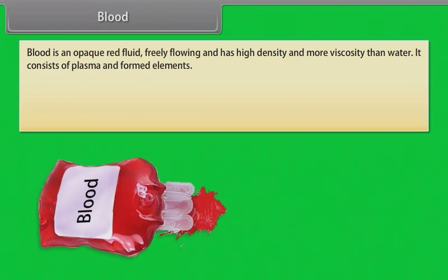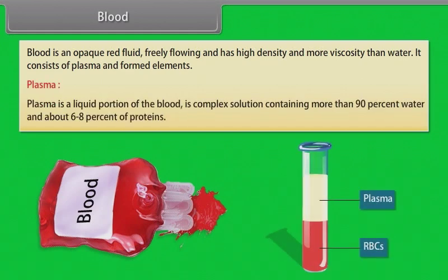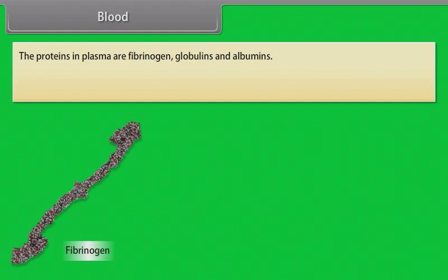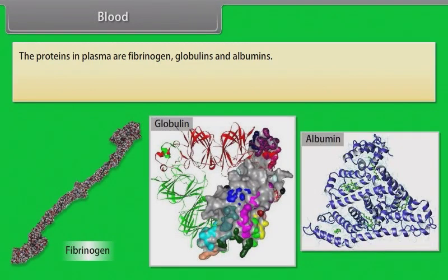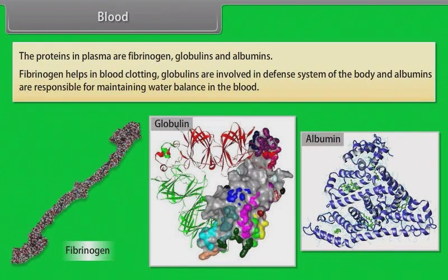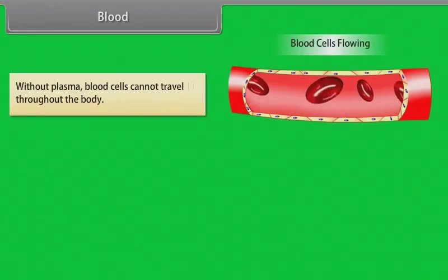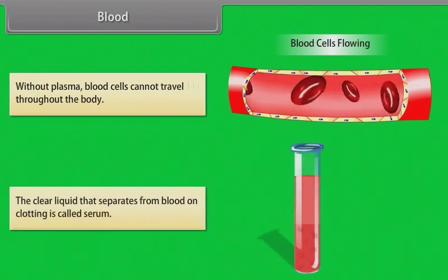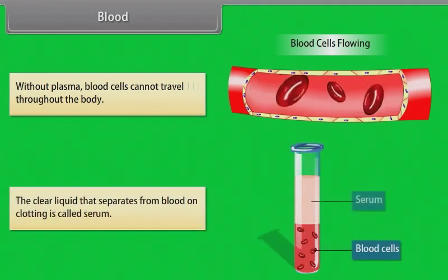Blood is an opaque red fluid, freely flowing and has high density and more viscosity than water. It consists of plasma and formed elements. Plasma is a liquid portion of the blood — a complex solution containing more than 90% water and about 6–8% proteins. The proteins in plasma are fibrinogen, globulins, and albumins. Fibrinogen helps in blood clotting; globulins are involved in the defense system of the body; and albumins are responsible for maintaining water balance in the blood. Without plasma, blood cells cannot travel throughout the body. The clear liquid that separates from blood on clotting is called serum.